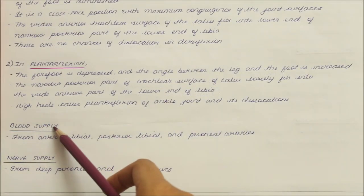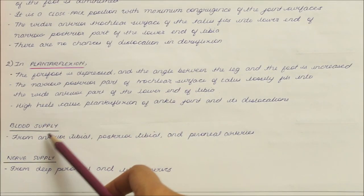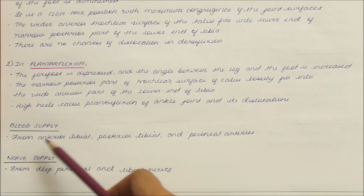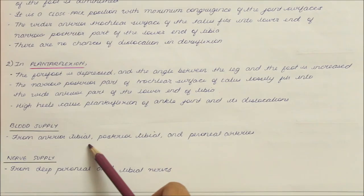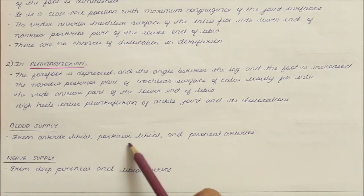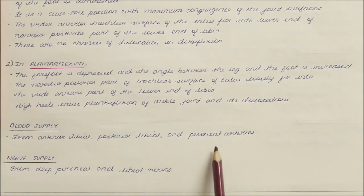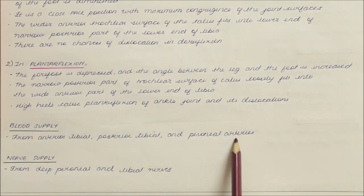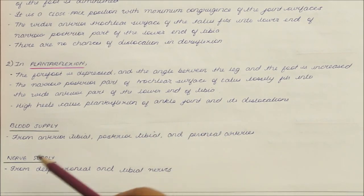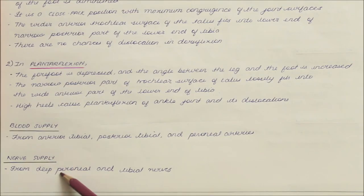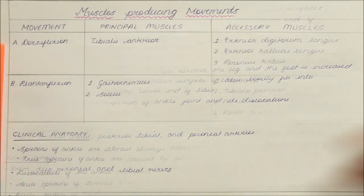The blood supply of the ankle joint is supplied from the anterior tibial, posterior tibial and peroneal arteries. The nerve supply is from the deep peroneal and the tibial nerves.